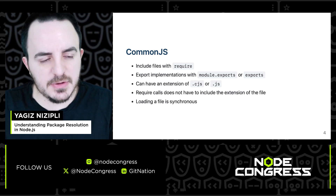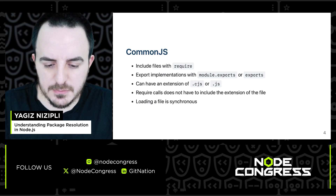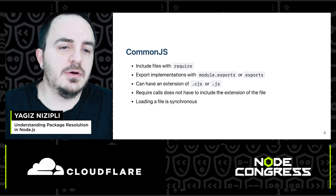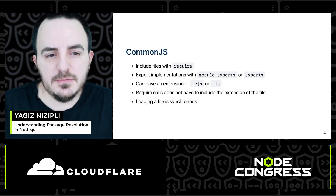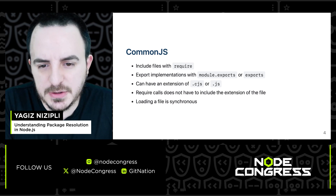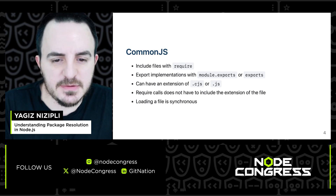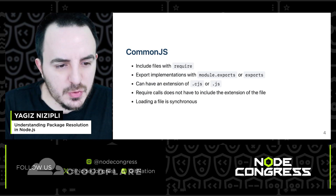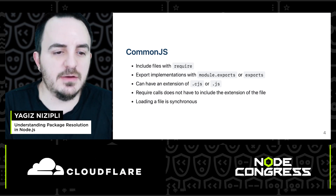Let's start with CommonJS. CommonJS is the first and most widely known module resolution strategy in Node.js. It includes files with require, exports implementations with module.exports or exports, and it can have an extension of .cjs or .js. Require calls do not have to include the file extension, and loading a file is synchronous.